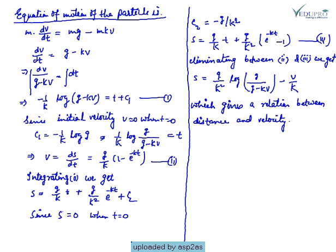Equation of motion of the particle is M dV/dt, where dV/dt is acceleration, equals M times g (g is gravitational acceleration) minus MKV. So equation of motion is M dV/dt equals Mg minus MKV. M is common and then cancelled out, so we have dV/dt equals g minus KV.